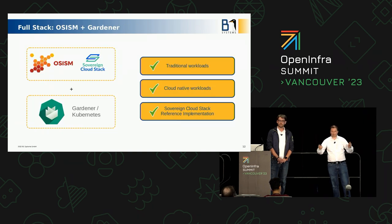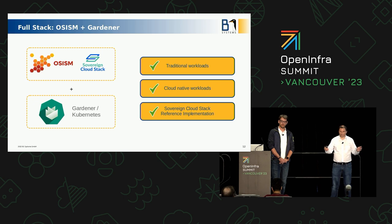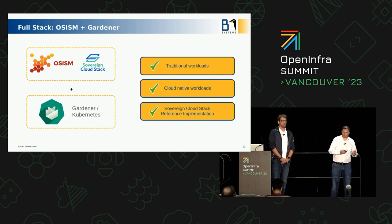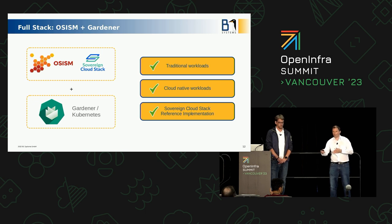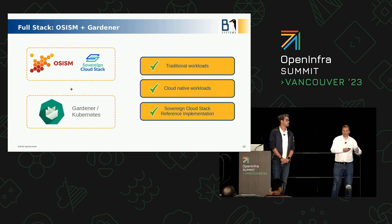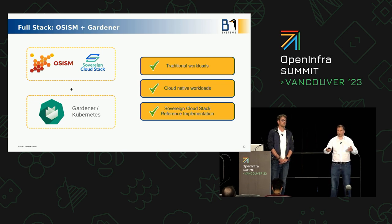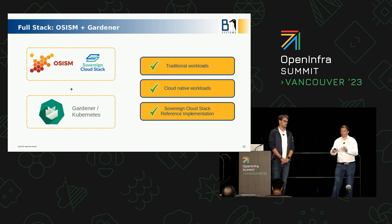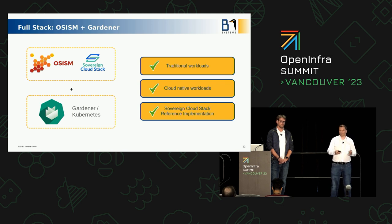OSISM plus Kubernetes Gardener is basically a full stack. It can be used for traditional workloads — old pet workloads or workloads somewhere between pet and cattle. Pet workloads are typically things like old Oracle databases or Microsoft Active Directory. SAP Netweaver or SAP HANA sit somewhere in the middle. And cloud-native workloads are usually running containerized, which is also possible with the Kubernetes layer.